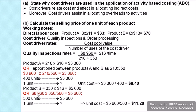For product B, 350 quality inspections are required. So 350 × $16 = $5,600, or equivalently $8,960 × 350 ÷ 560 = $5,600. This is the total quality inspection cost for 500 units of product B. For one unit, the cost is $5,600 ÷ 500 = $11.20.